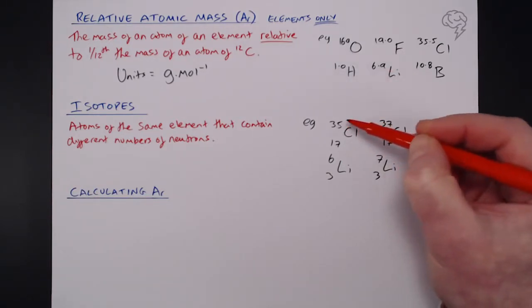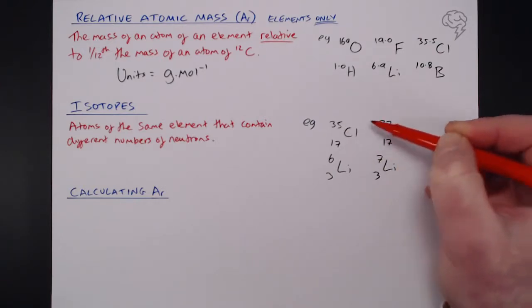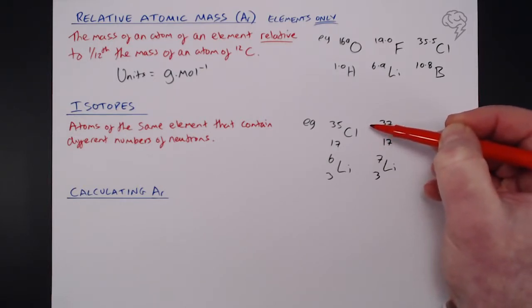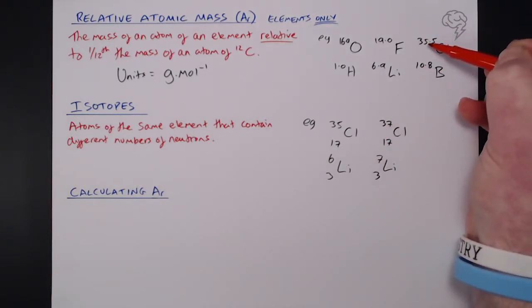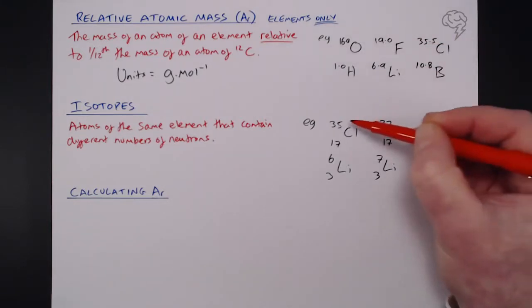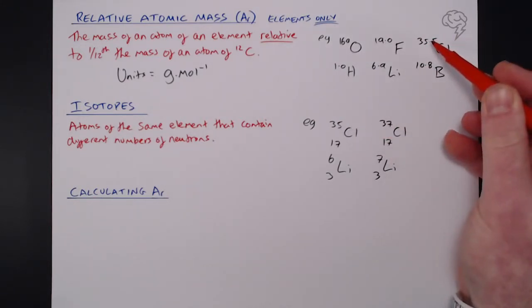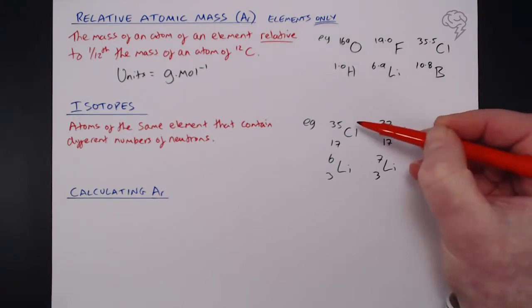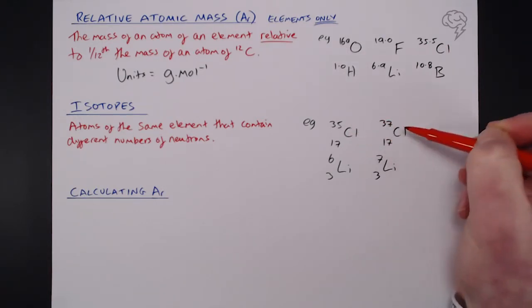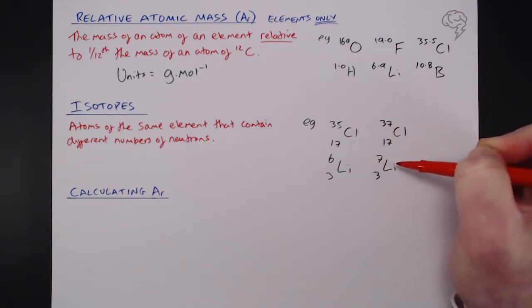Because you'd think that the average between 35 and 37 of the two isotopes would lie directly in the middle, 36. Now, you'd be right in thinking that. But then again, this is 35.5. So, the average between these two isn't 36, but 35.5. So it's got to take into account how much of these are in existence. Same for lithium.